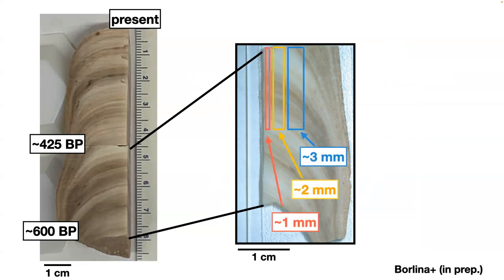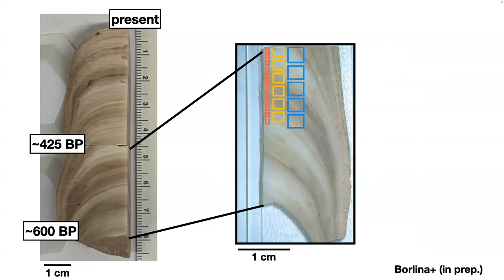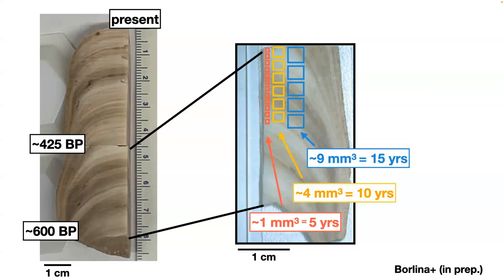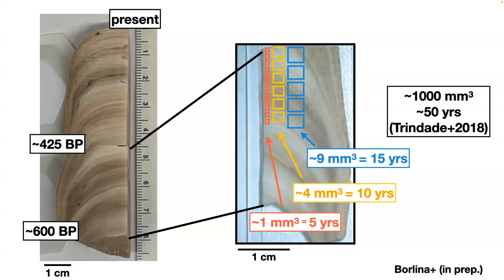We explored a couple of different sample sizes — different widths of strips cut from the one-millimeter-thick section, all one millimeter deep. We cut those into roughly square samples on the surface, each providing different time averages. We're looking at about 5 to 10 to 15 years of magnetic variation with these sample sizes. For reference, samples from the previous study were about 1000 cubic millimeters in size, averaging about 50 years of magnetic field variation.